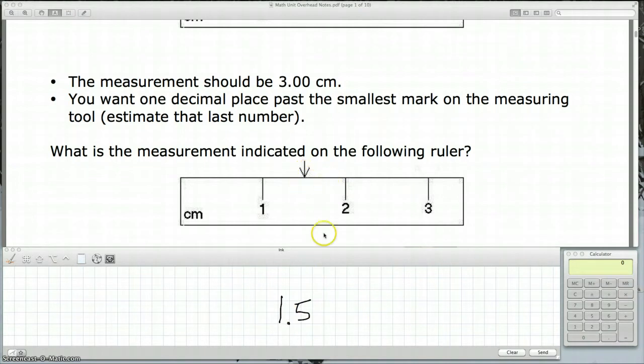Now some people might say 1.45 or 1.51 or something like that. Well, we can't estimate that far out. The smallest mark on our ruler is 1 centimeter. So 1 centimeter, 2 centimeters. And we always estimate one past the smallest mark on the ruler, so I'm going to estimate the tenths place. But you can't keep estimating. There's no way you'd be able to tell if it's 1.50, 1.51, 1.52, anything like that. You can only estimate that last number.